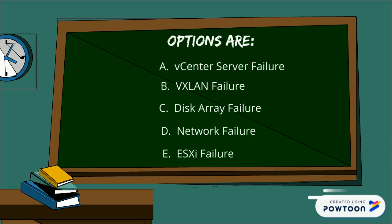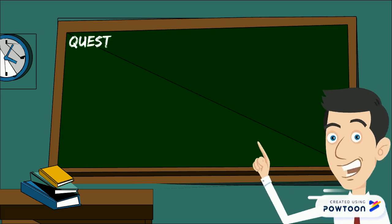Let's review the options again. Option A: vCenter Server Failure, B: VXLAN Failure, E: ESXi Failure — none of these failures trigger events that cause inaccessibility issues to a storage device or LUN. Disk Array Failure is considered a PDL trigger, whereas Network Failure triggers APD events.